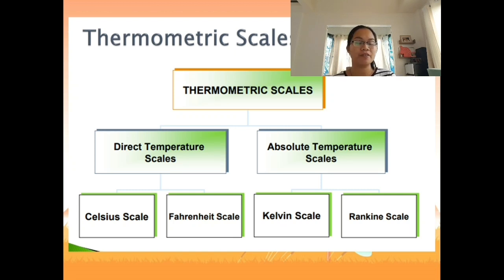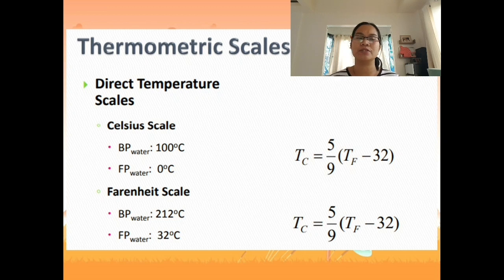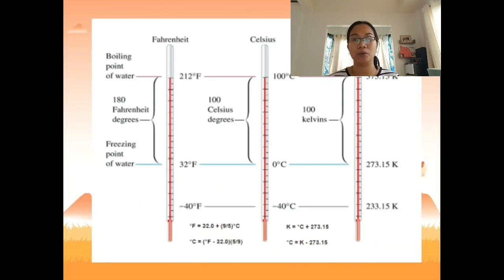For the Kelvin scale, absolute zero — zero Kelvin — means the molecules no longer have any motion. Unlike zero degrees Celsius, which doesn't mean the molecules have stopped moving, because molecules can still vibrate at that temperature.